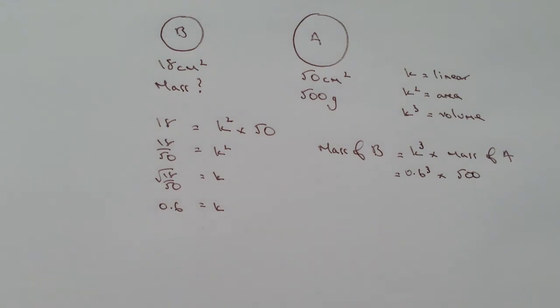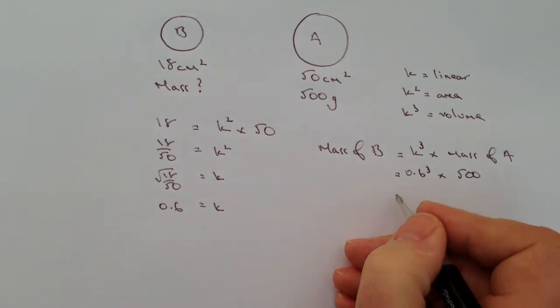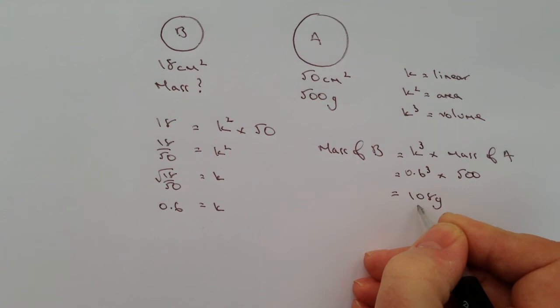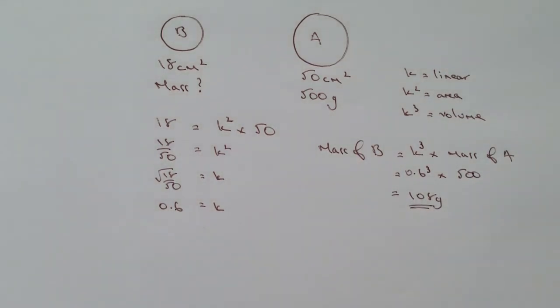And if you put that into a calculator you're going to get an answer of 108 grams. So therefore, because these two shapes are mathematically similar, shape B has a mass of 108 grams.